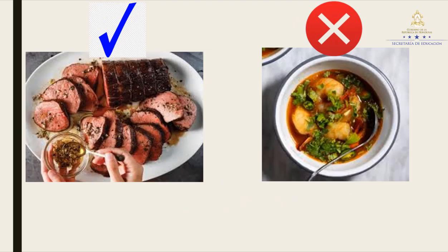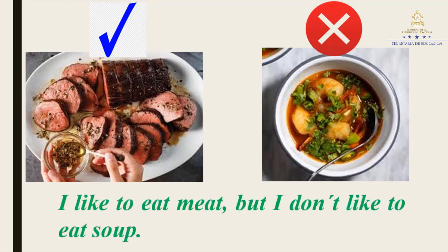The next one. What can you see in the first picture? Meat. And in the other one? Soup. Okay, we are going to create a sentence using both words — meat and soup. Tell me, what is your sentence? I like to eat meat, but I don't like to eat soup. Excellent. Repeat after me: I like to eat meat, but I don't like to eat soup.